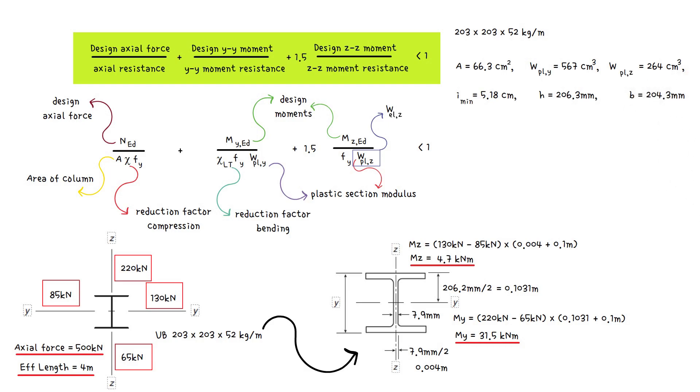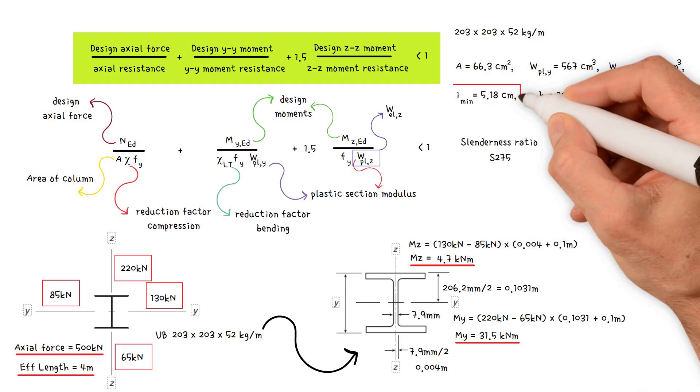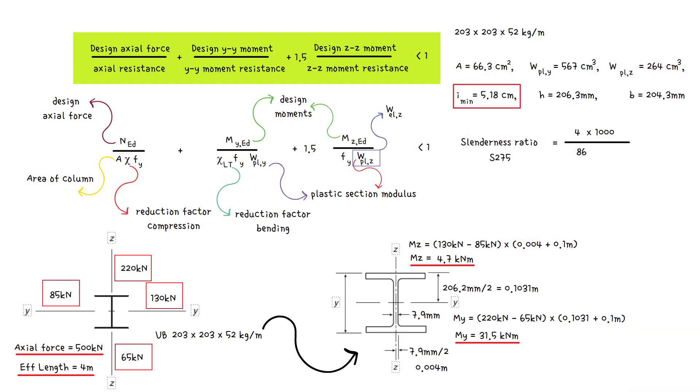First, we need to work out the slenderness ratio, which for S 275 equals the effective length 4 meters times 1000 to convert it to millimeters, divided by 86, divided by minimum radius of gyration 51.8 millimeters. This gives us a value of 0.9.